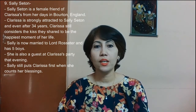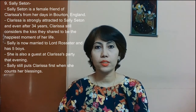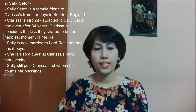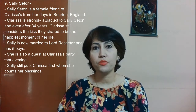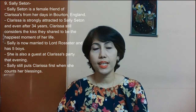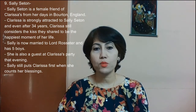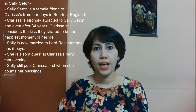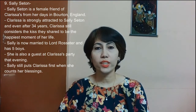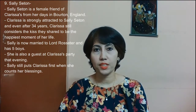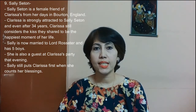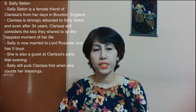The ninth character is Sally Seton. Sally Seton is a female friend of Clarissa's from her days in Bourton, England. Clarissa is strongly attracted to Sally, and even after 34 years she considers the kiss they shared to be one of the happiest moments in her life. Now Sally is married to Lord Rosetta and has five children. She is also a guest at Clarissa's party that evening, and even after years apart Sally still puts Clarissa first when she counts her blessings.